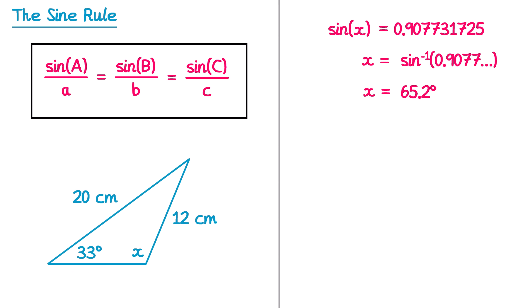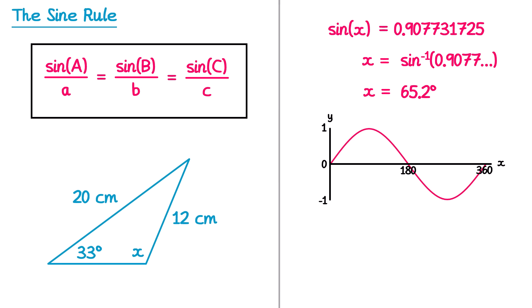Looking at the graph of sine x, it goes between 1 and -1. When we get x equals 65.2°, that's because sine of 65.2° equals approximately 0.9077. But due to the symmetry of the sine graph, there's a second angle that also gives the same value. Extending the horizontal line across to the sine graph gives a second angle. By symmetry, that second angle is 180 minus 65.2, which equals 114.8°. So both sine of 65.2° and sine of 114.8° equal 0.9077.